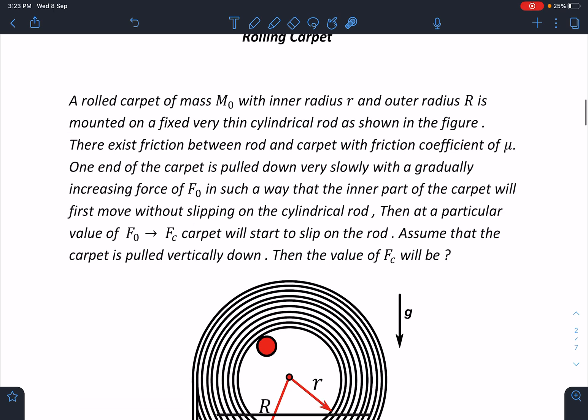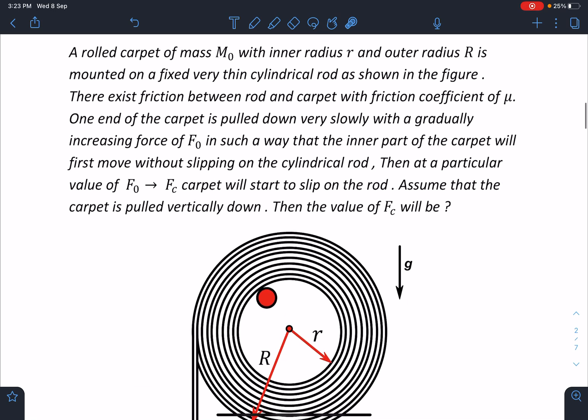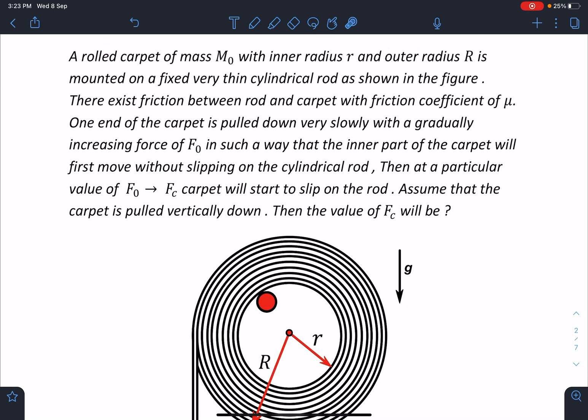This is the problem statement here. A rolling carpet of mass M0 with inner radius r and outer radius R is mounted on a fixed very thin cylindrical rod as shown in the figure. There exists friction between rod and carpet with friction coefficient of μ. One end of the carpet is pulled down very slowly with a gradually increasing force of F0 in such a way that the inner part of the carpet will first move without slipping on the cylindrical rod.